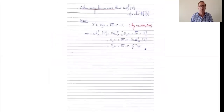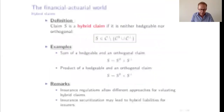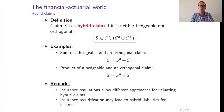Here is another way to prove that the value at risk at level P of S-orthogonal equals N times mu plus the square root N term — you can look at that yourself. Now we have defined hedgeable claims, we have defined orthogonal claims, but there are also other claims, and all the rest we call hybrid claims.